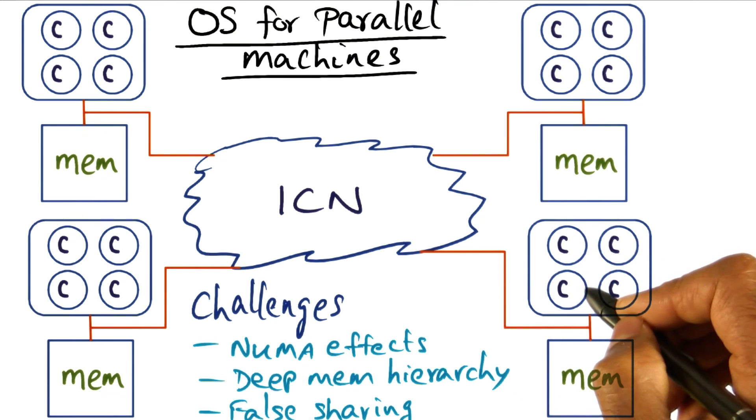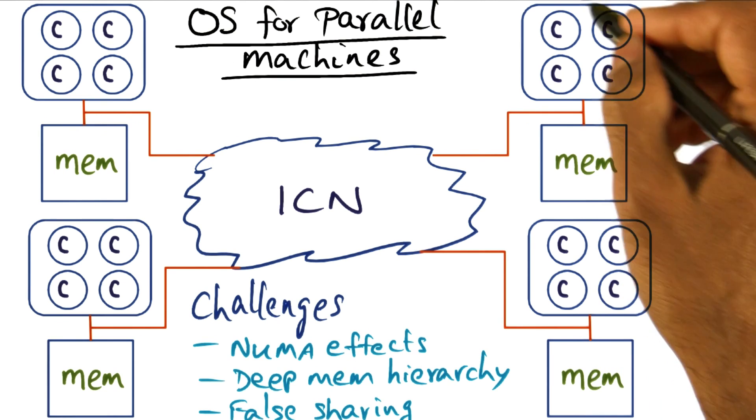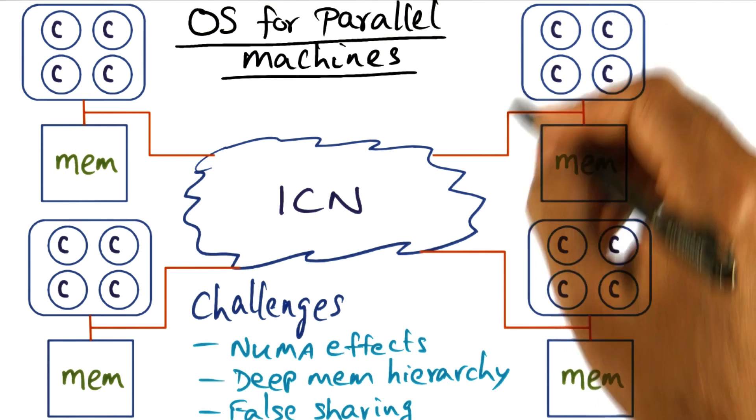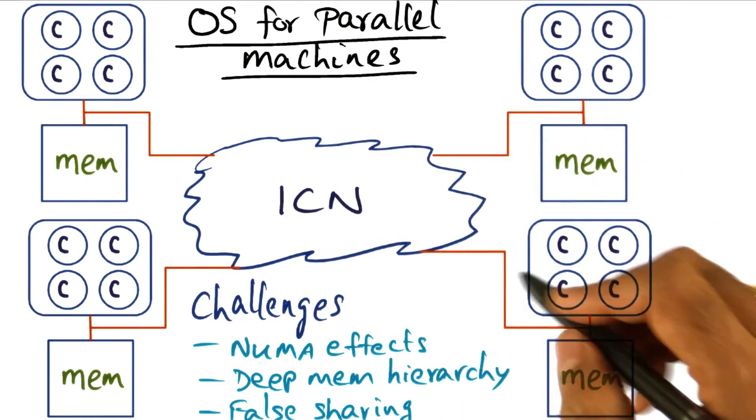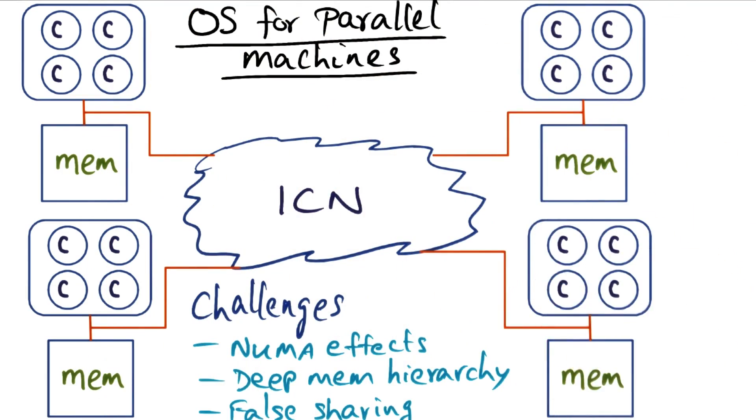And even within the same core, and even within the same processor, multiple cores, and across processes that are on different nodes of parallel machine connected by the interconnection network.